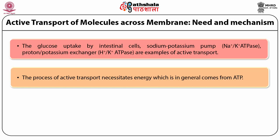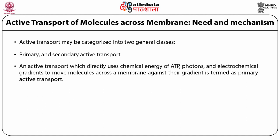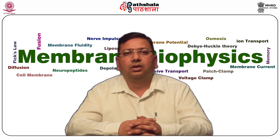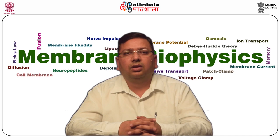Active transport may be categorized into two general classes. An active transport which directly uses chemical energy of ATP, photons and electrochemical gradients to move molecules across a membrane against their gradients is generally termed as primary active transport. Another mechanism, independent of direct ATP coupling and utilizing electrochemical energy generated from pumping ions out of the cell, is known as secondary active transport.